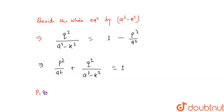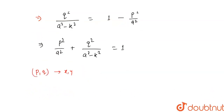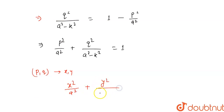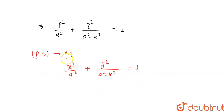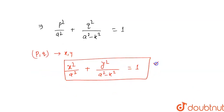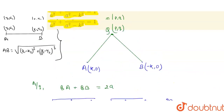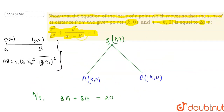Since this is a locus, we replace p and q with x and y. So we get x squared over a squared plus y squared over (a squared minus k squared) equals 1. This is what we had to prove — hence proved.